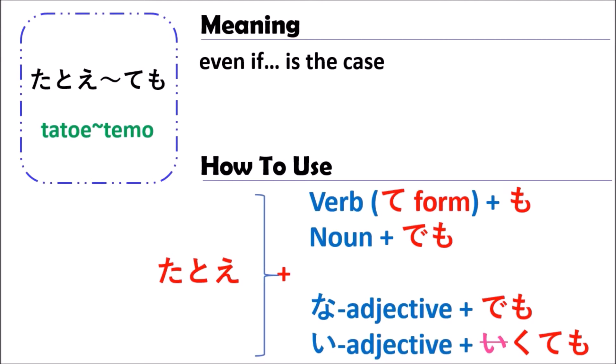And for the noun, when you use the noun you should follow it by でも. For example, ごはんでも, たべものでも, 野菜でも, something like this. And for the na-adjective you do the same — after the adjective you follow by でも, for example キレイでも.